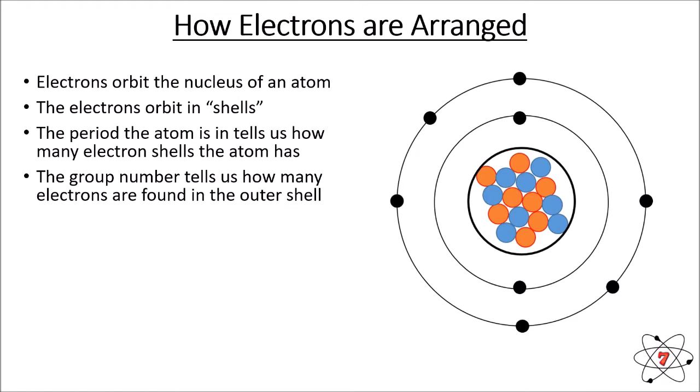Sodium is in period three, so has three electron shells. Potassium is in period four, so has four electron shells — and so on. The period that an atom is in tells us how many electron shells there are. What's also really important is that the group number tells us how many electrons are found in the outer shell. An element in group one will have one electron in its outer shell; an element in group two will have two electrons in its outer shell. Oxygen has six electrons in its outer shell, so we say it is in group six.